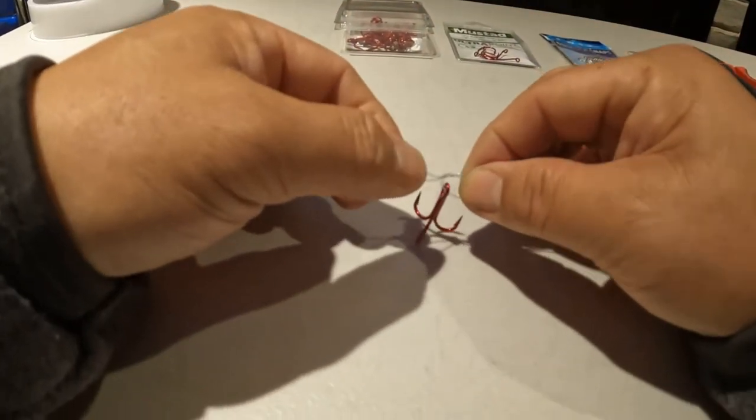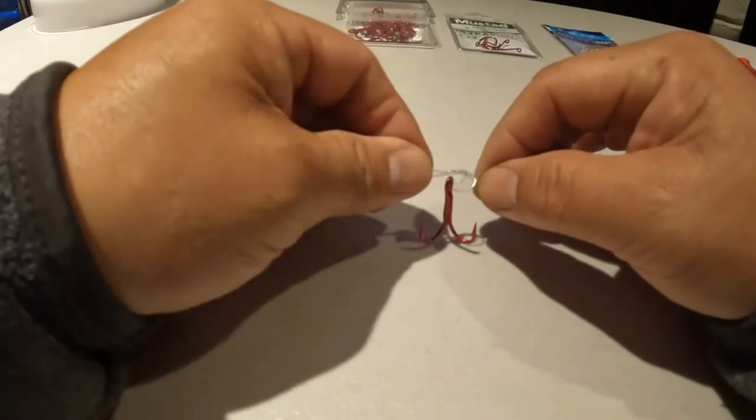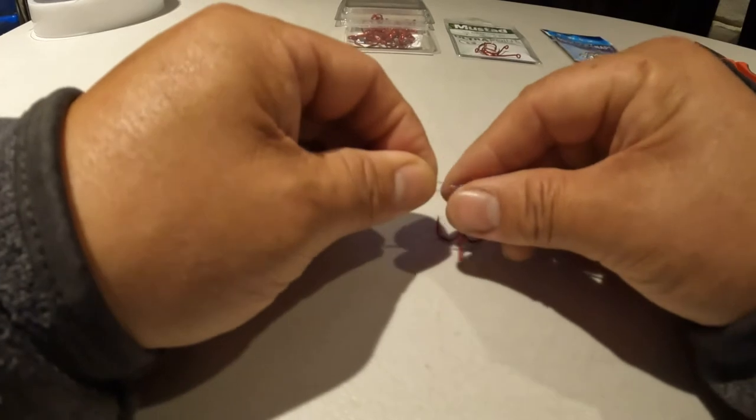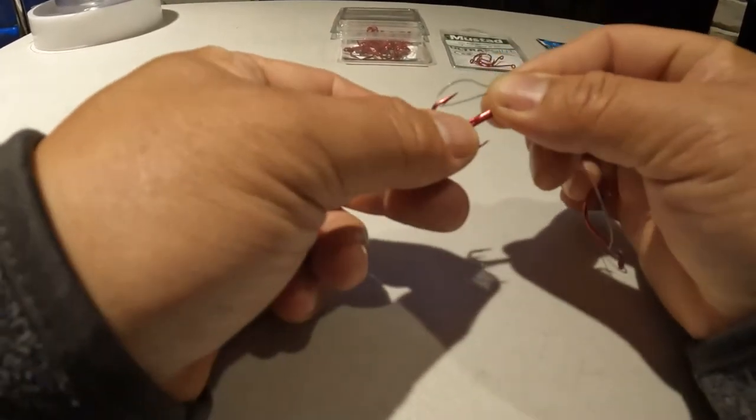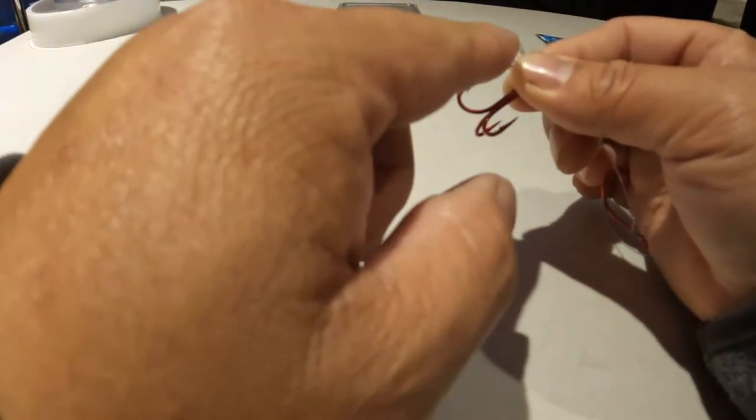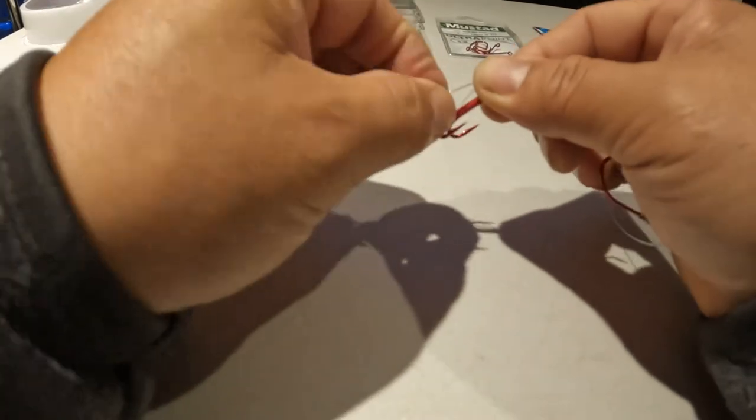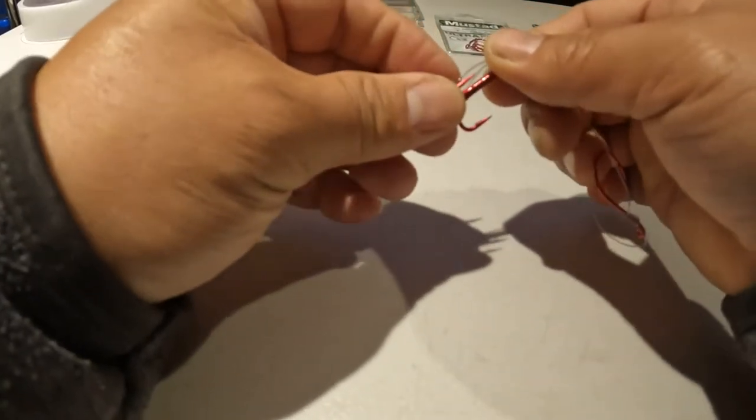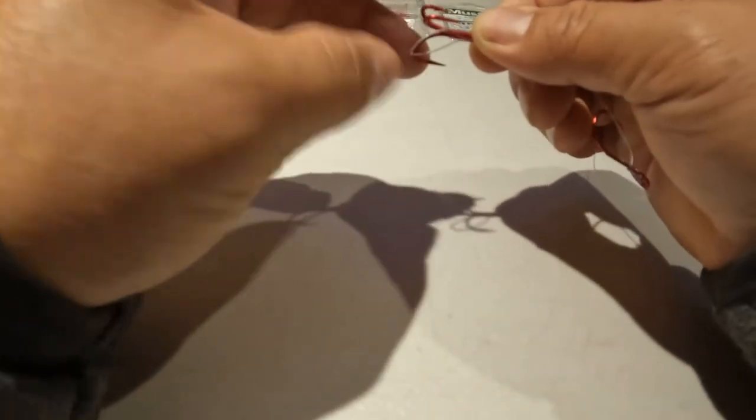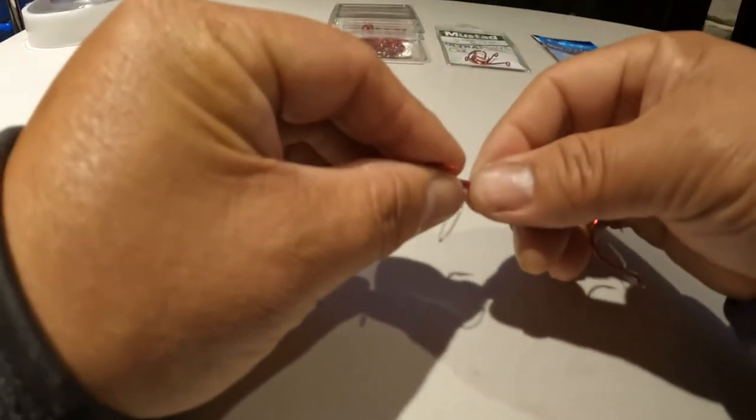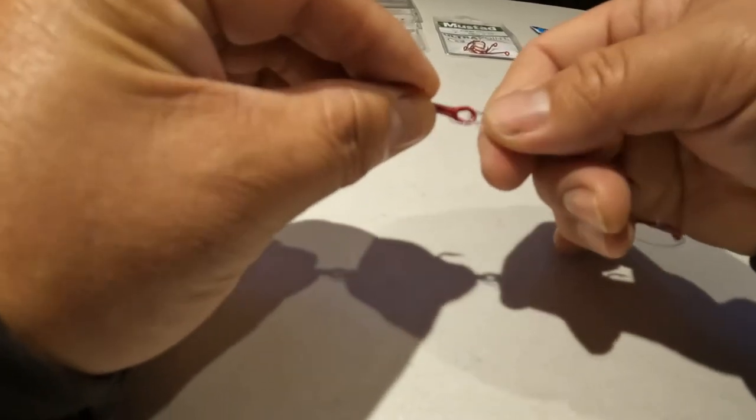Don't cinch it down, just leave yourself a little loop right there, see that? Okay, and then with this opening right here, what you're going to do is you're going to thread the hook into this loop. There's one hook in, two, and three. So once you got all three of them in, what you're going to do is you're going to cinch it down.